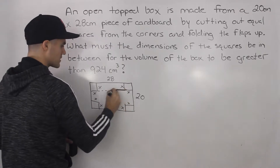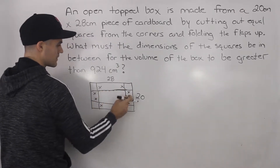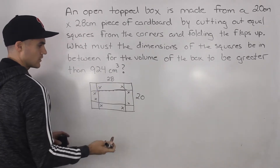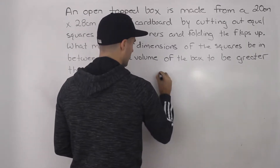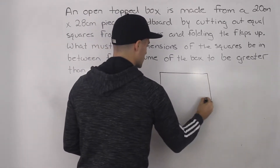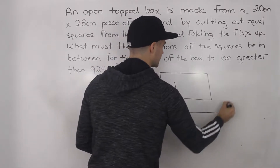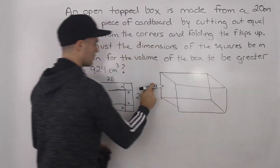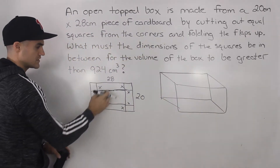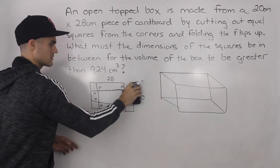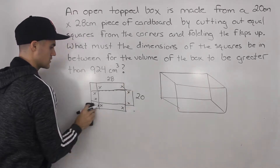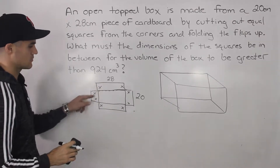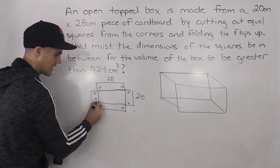Basically, the base of the box is going to be this here. We're going to fold this side up, this side up, this side up, and this side up. When we fold these sides up, the height of the box is going to be this x value.